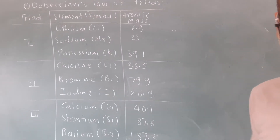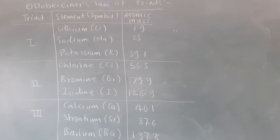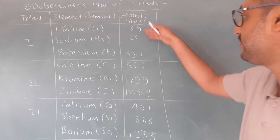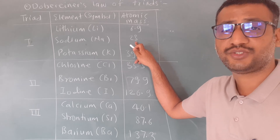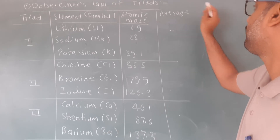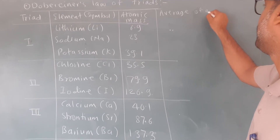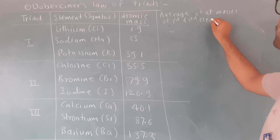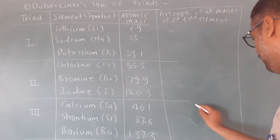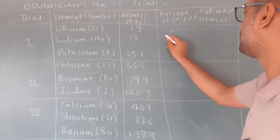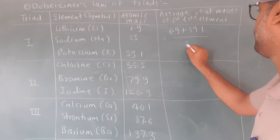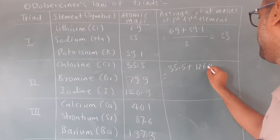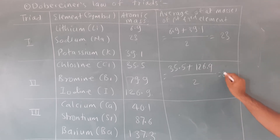Which interesting thing was noticed by Dobereiner? The atomic mass of the middle element is the average of the atomic masses of the first and last element. For example, in the first triad, the middle element is sodium. First element lithium is 6.9, third element potassium is 39.1 — divided by 2 gives an average of 23, which matches sodium exactly. For the second triad, chlorine 35.5 plus iodine 126.9 divided by 2 gives an average of 81.2. You may cross-check.